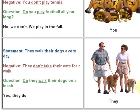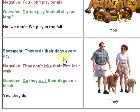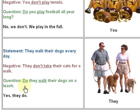Now we have the 'they' form, and they can be people or things. Here we have people with dogs. Statement: 'They walk their dogs every day.' Negative: 'They don't take their cat for a walk.' Question: 'Do they walk their dogs on a leash?' This is a leash — the line from his hand to the neck of the dog. Yes, they do.